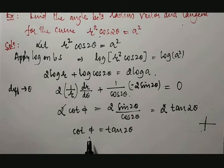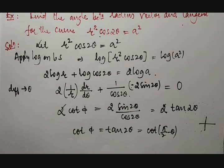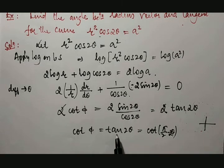As per the ASTC rule, tan 2θ equals cot(90° - 2θ). 90 minus means first quadrant, so cot will become tan. It becomes positive. Therefore, cot φ = cot(90° - 2θ).